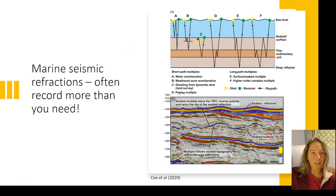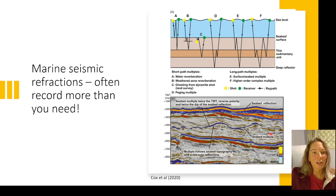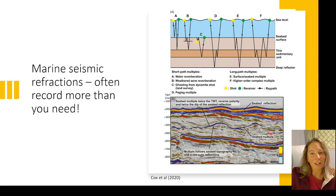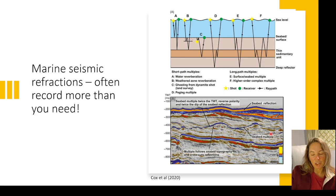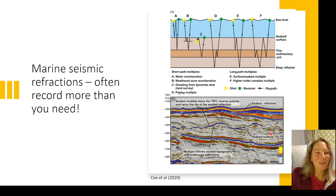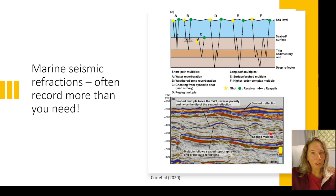Another problem we often have is that in marine acquisition, we often record more data than we actually need for imaging. This can include refracted arrivals that travel along the interfaces rather than being reflected from them. This illustration from Cox et al. 2020 shows that these refractions can actually provide additional information about shallow velocity structure. We need to be careful to handle them correctly during processing to avoid interference with our reflection data. We've also got multiples shown in the image, and that's something we want to be wary of and work to remove during the processing step.